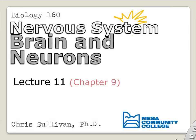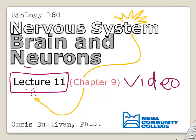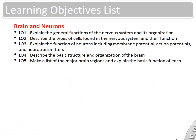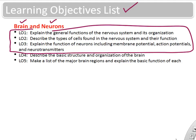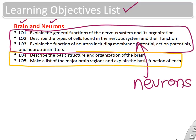This video will cover brain and neurons. This is lecture video 11. The learning objectives are divided into two parts: the first half covers neurons, action potentials, and neurotransmitters, and the second half covers the brain and brain regions.